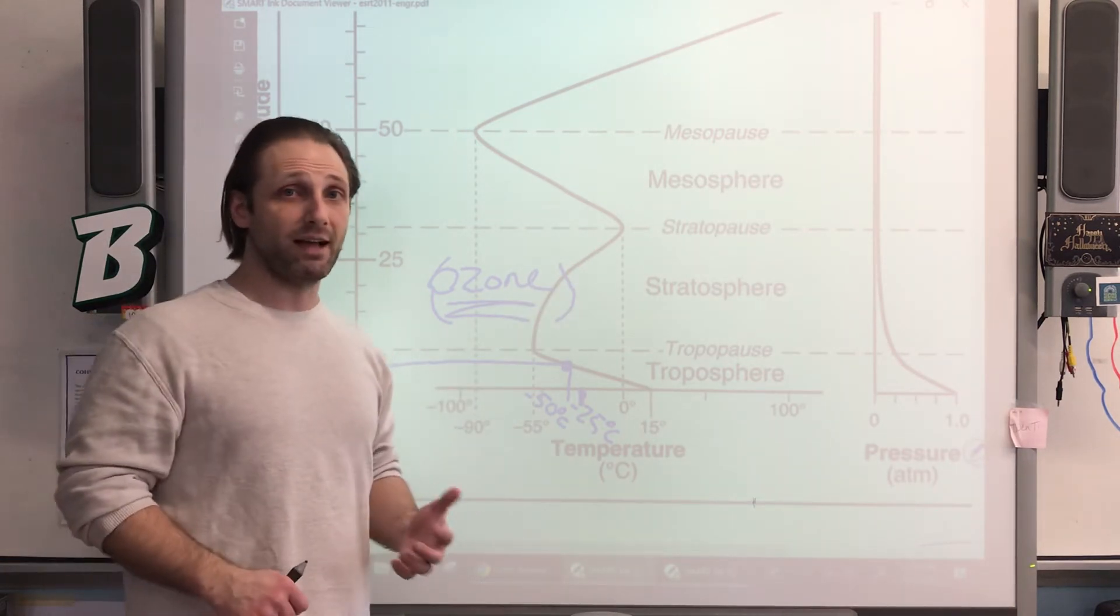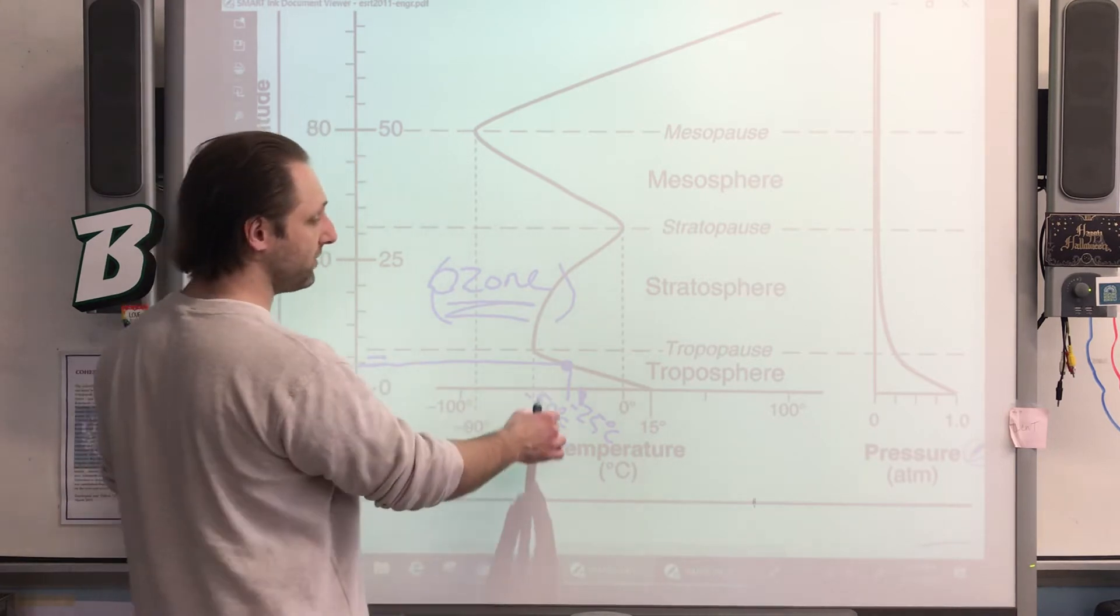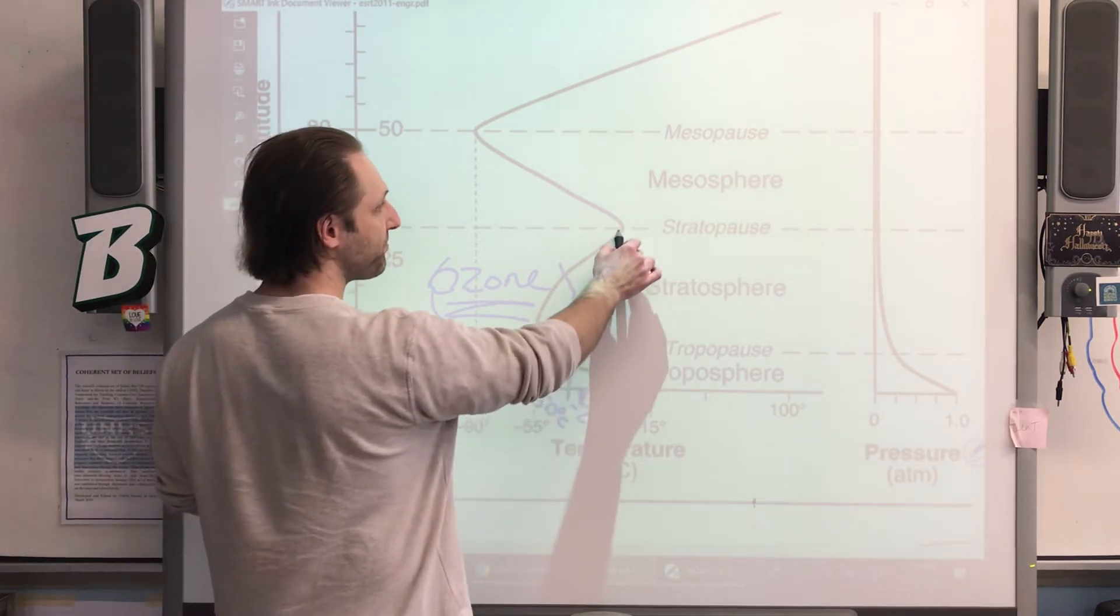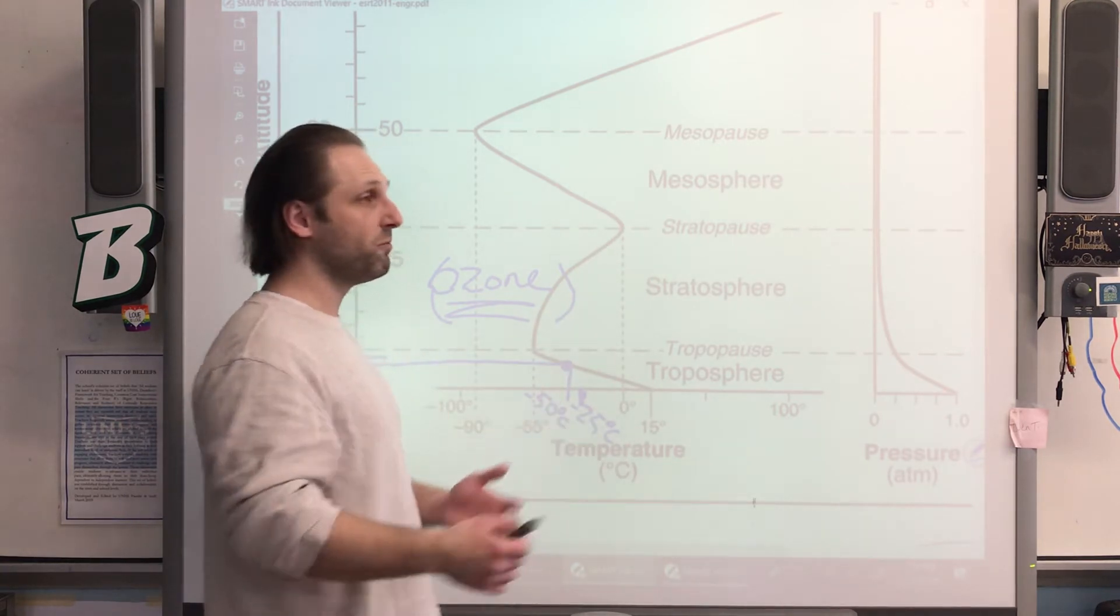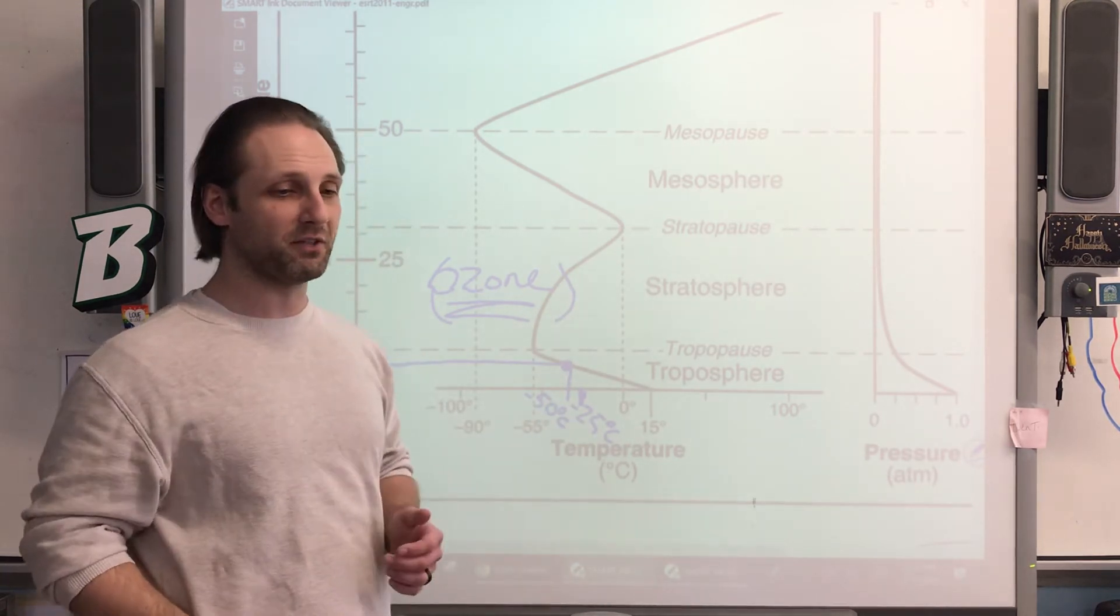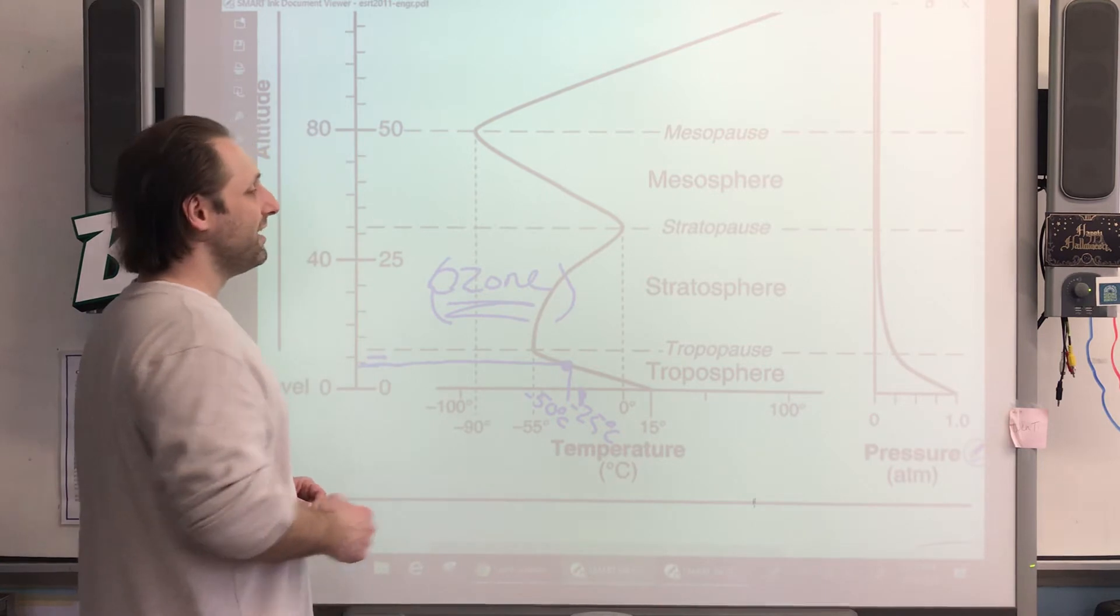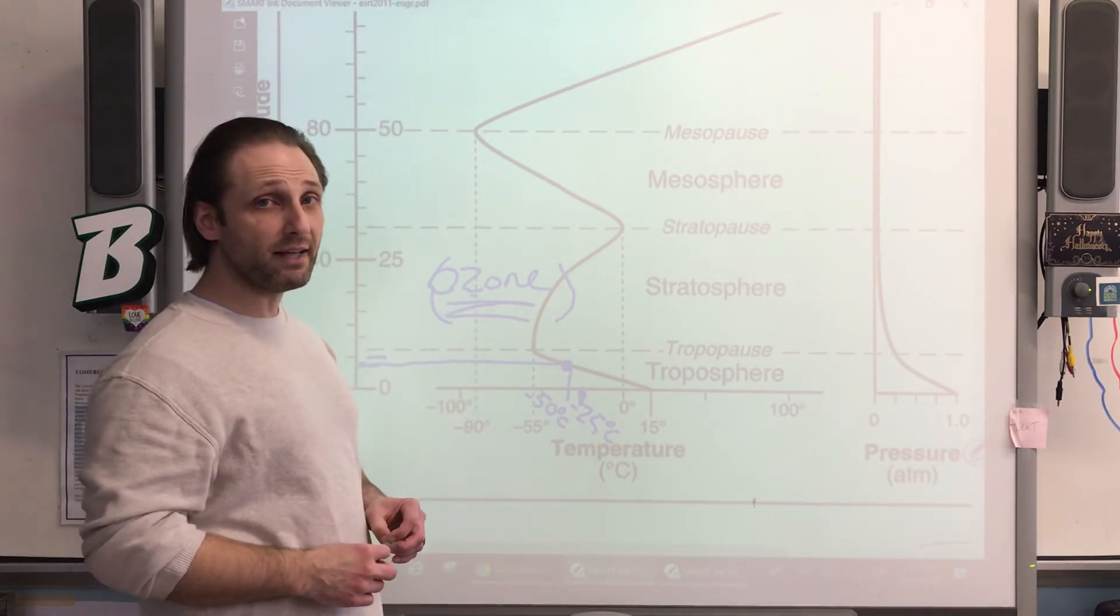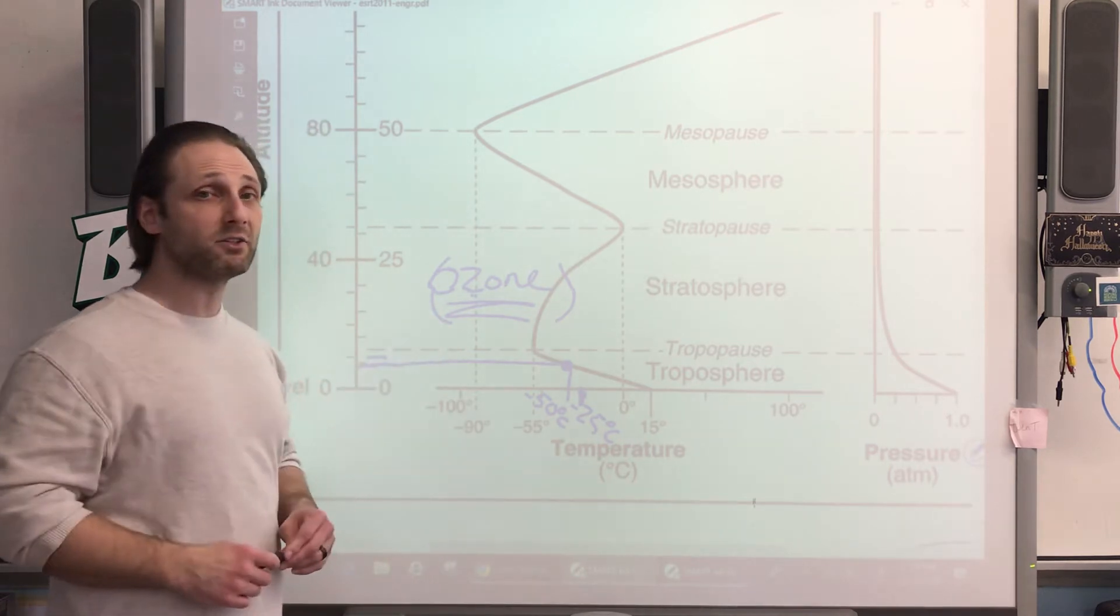I mean, it's not exactly balmy, it's not like the equator or anything, but it does raise us from negative 55 degrees Celsius up to zero degrees Celsius. So we go from way below freezing to freezing. Okay, like to point out that ozone molecules protect us from UV radiation - we'll talk more about that during climate.